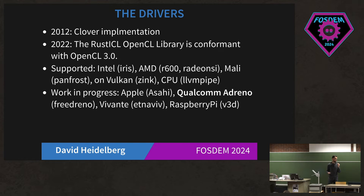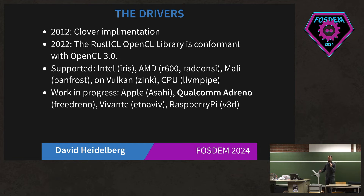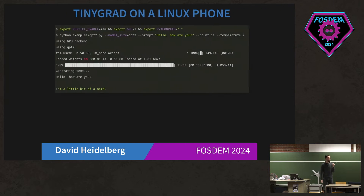There is work in progress for multiple drivers, including Asahi and Qualcomm Adreno — which is present in the OnePlus 6, a pretty popular Linux phone that I also own. And Vivante, which is used in, for example, the Librem 5 and Raspberry Pi.